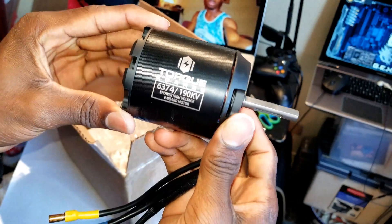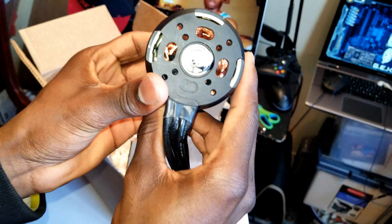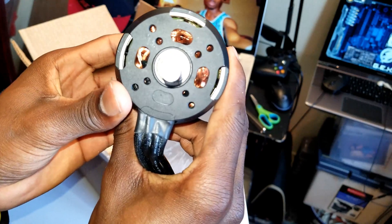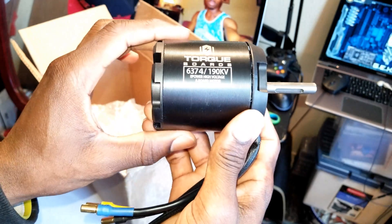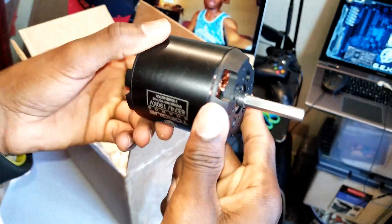This is a huge motor, 6374. So 63 is the diameter and 74 is the length. This is a huge motor.